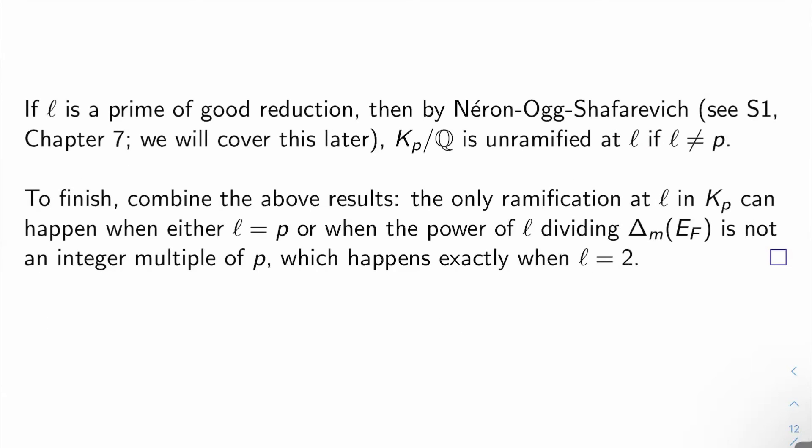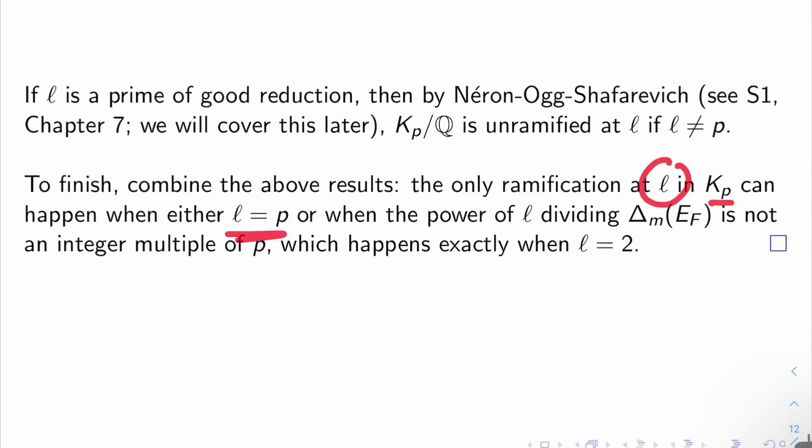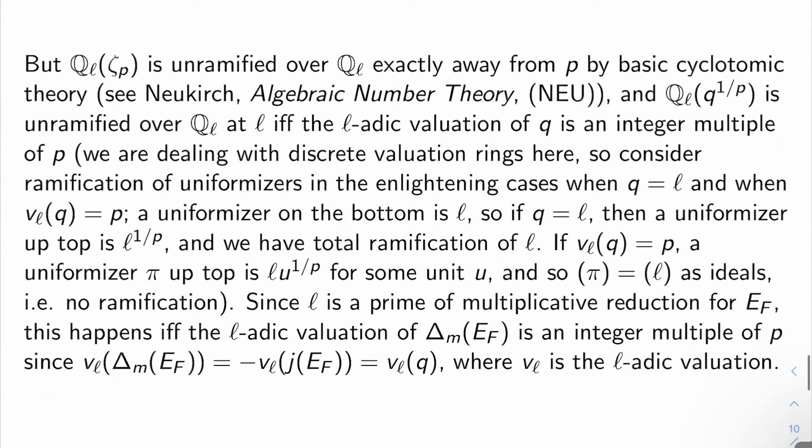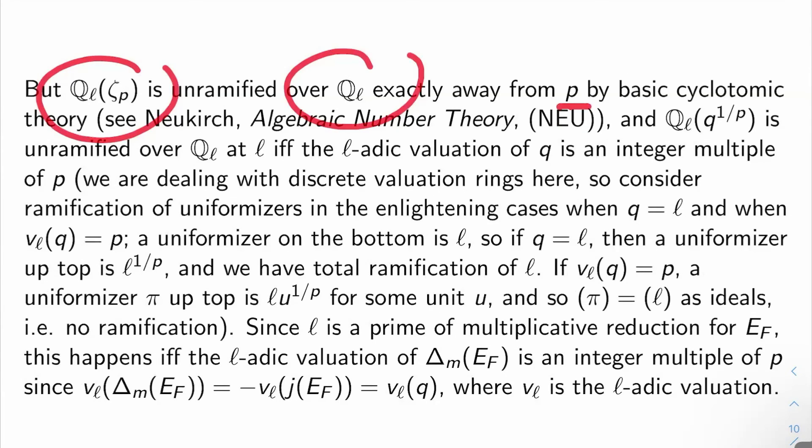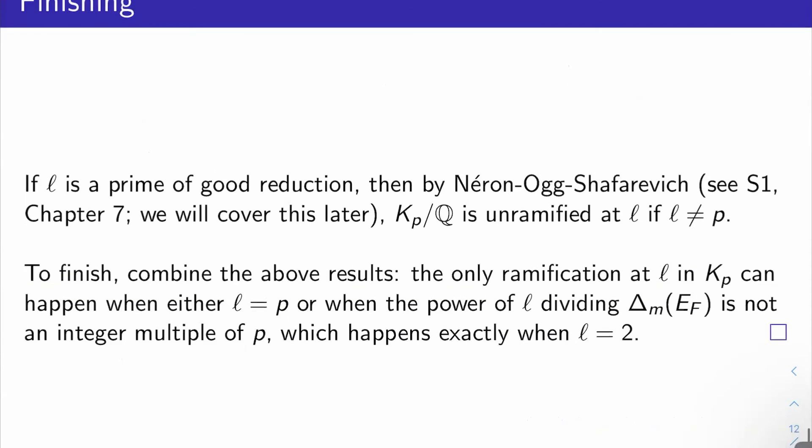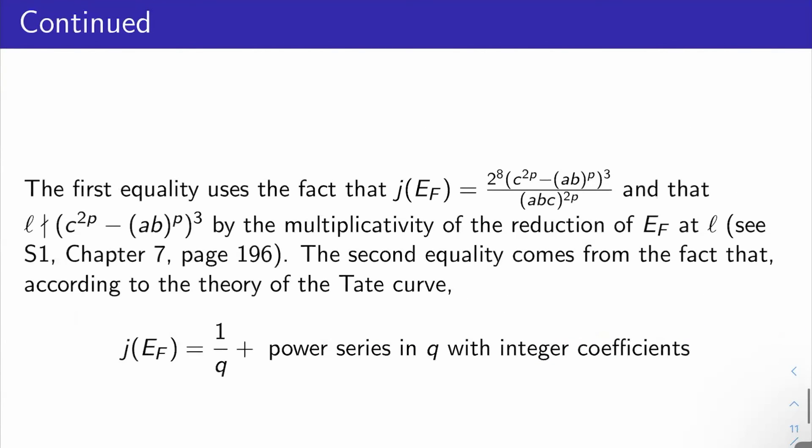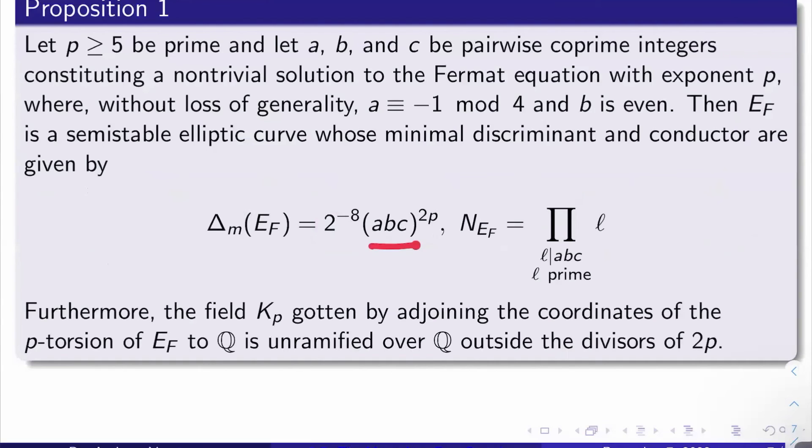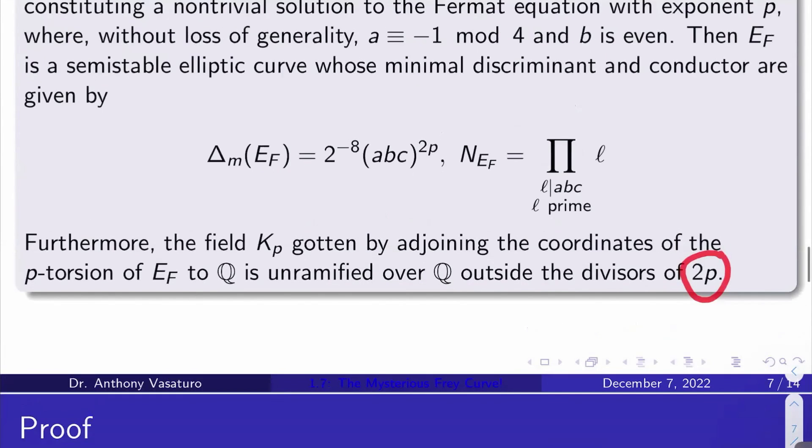So, take the two results, the multiplicative reduction results, good reduction results, and combine them. And what do you find? You find that the only ramification at l in K_p happens either when l equals p, so maybe from this case, while we actually also saw that up here in the multiplicative case, this extension was unramified exactly away from p. So, ramification could happen at p in either case. Or, the other thing we saw is that you could have ramification when the power of l dividing the minimal discriminant of the Frey curve isn't an integer multiple of p. But if you just go back up and look at the minimal discriminant, you see that that happens if and only if l is 2. I mean, every other power here is an integer multiple of p. So, basically, ramification can only happen at 2p, but that's exactly what the proposition says.